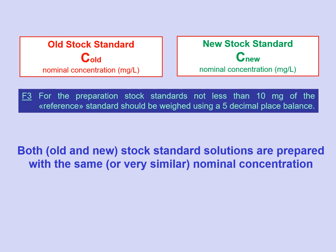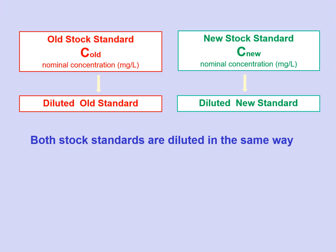When starting to use a new reference standard, before the expiry date of the old standard has been reached, we should prepare two stock solutions — one for the old and one for the new standard — with exactly the same or very similar nominal concentration, C-old and C-new. Both solutions should then be diluted equally so that the concentration of the diluted standards is exactly the same or very similar and within the optimal linearity range of the detector response.